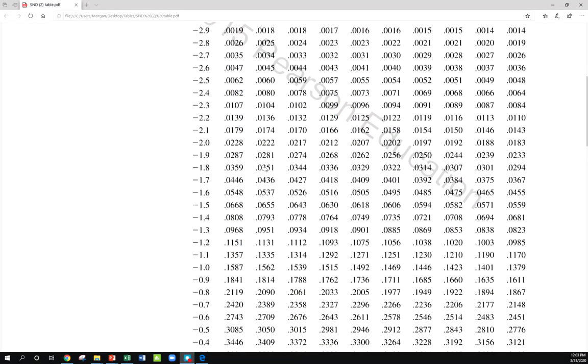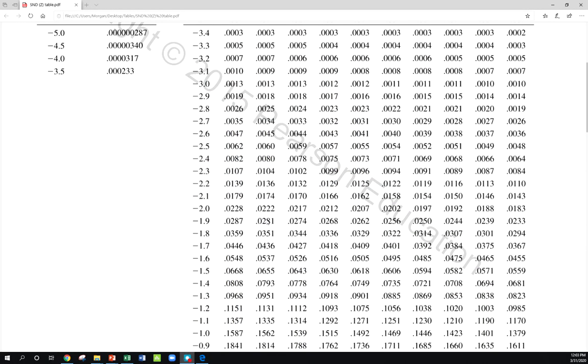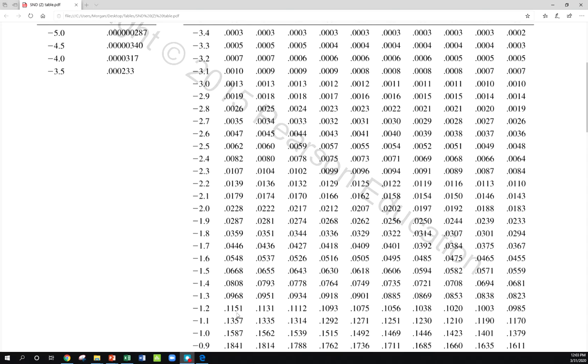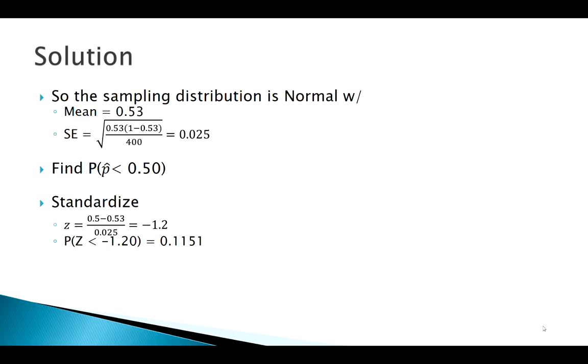Now, I could go to my table with my z-score. It was negative 1.2. So here's negative 1.20. That gives me 0.1151. So I could find that with my table. I could check myself in Minitab or Technology, whatever we wanted to use there.